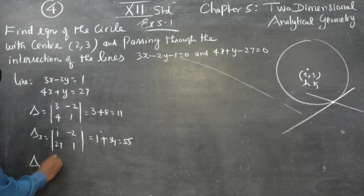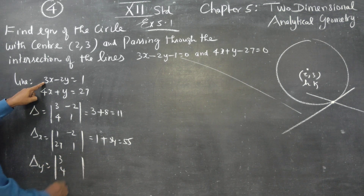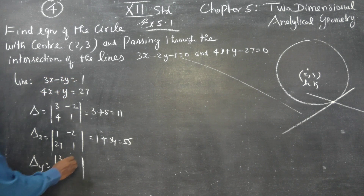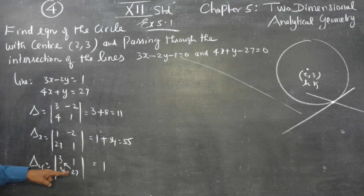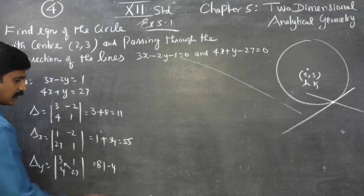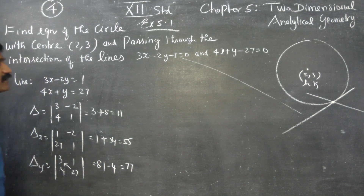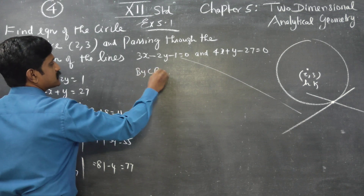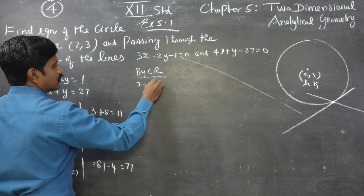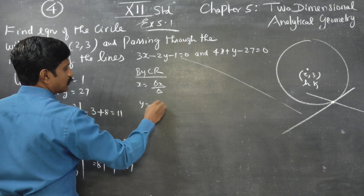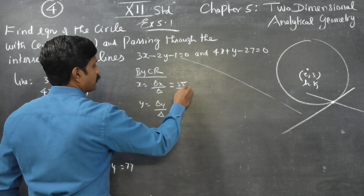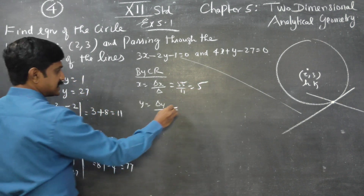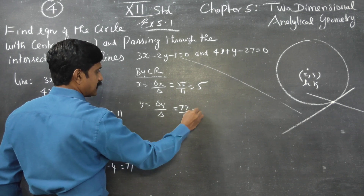Then delta y: we use the x-coefficients with the right-hand side. Delta y gives us 3 times 27 minus 4 times 1, which is 81 minus 4, so delta y equals 77. By Cramer's rule: x equals delta x over delta, which is 55 over 11 equals 5; and y equals delta y over delta, which is 77 over 11 equals 7.